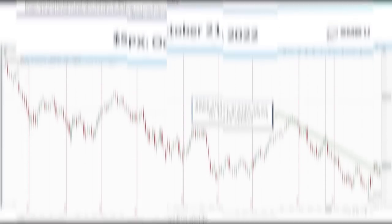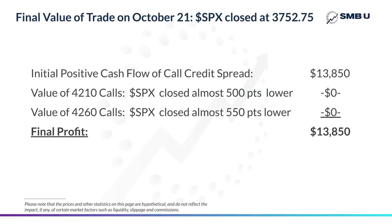So if we move to the day that these options in October expire, we can see that the SPX again closed significantly down at 3752. And so again, both options expire worthless. And again, you have just pocketed the $13,850 you collected initially.